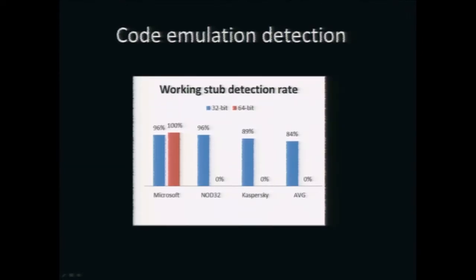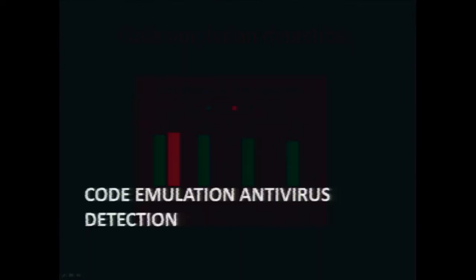Hi everyone. As Arne explained, using the different packing techniques it's possible to evade more and more antiviruses using static analysis, until we use the resource packer which completely bypasses static analysis. The problem is that some antiviruses are still able to accurately identify the initial malware using code emulation. The natural question is: how are antiviruses implementing code emulation, and is it possible to bypass it — hopefully in a generic way?